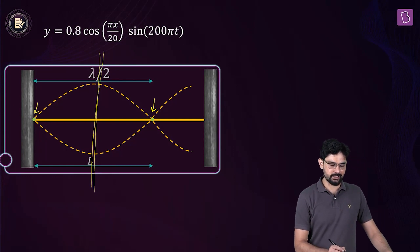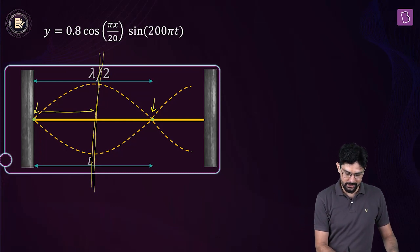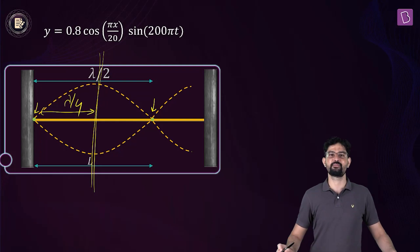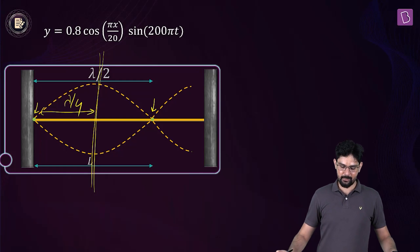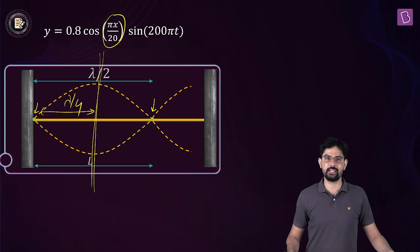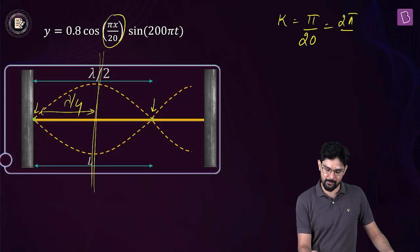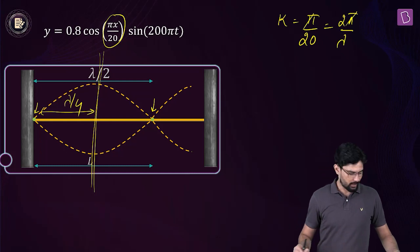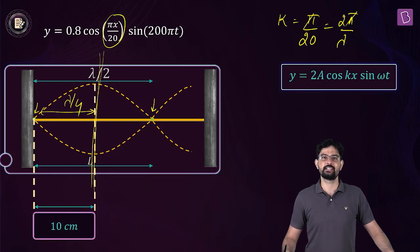The separation between a successive node and antinode is λ/4. So we need to find λ and divide by 4. The factor kx is (π/20)x, which means wave number k = π/20. Since k = 2π/λ, lambda comes out to be 40 cm, and λ/4 = 10 cm.